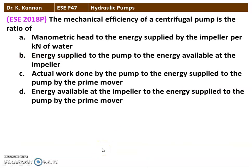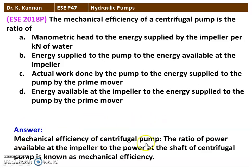The next question from the 2018 question paper: the Mechanical Efficiency of a Centrifugal Pump is the ratio of — Option A: Manometric Head to Energy Supplied by the impeller per kilometer of water; Option B: Energy Supplied to the Pump to Energy Available at the Impeller; Option C: Actual Work Done by the Pump to Energy Supplied by the Prime Mover; Option D: Energy Available at the Impeller to Energy Supplied to the Pump by the Prime Mover. The correct option is D — Energy Available at the Impeller to Energy Supplied to the Pump by the Prime Mover. That is the correct definition of Mechanical Efficiency.